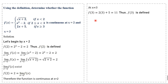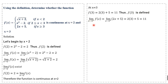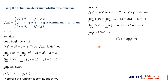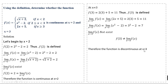Now we check the continuity at x = 3. For x ≥ 3 we use the expression 2x + 5, and at x = 3 the value of the function is 11, so it is defined. For the right limit when x > 3 we get 11, and for the left limit when x < 3 we get 7. Since the left limit is not equal to the right limit, the limit does not exist. Therefore the function is discontinuous at x = 3.